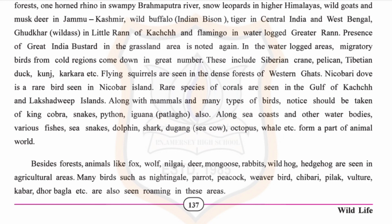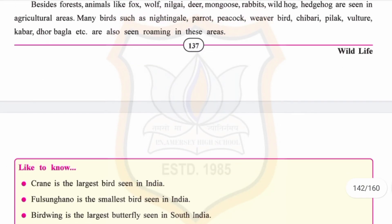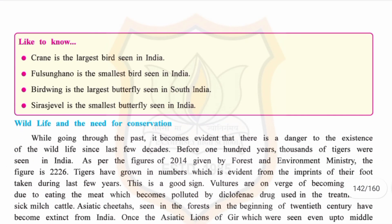For your knowledge, the crane is the largest bird seen in India. The phool shaguno is the smallest bird seen in India. The bird-wing is the largest butterfly seen in South India, and the sirus jibil is the smallest butterfly seen in India.